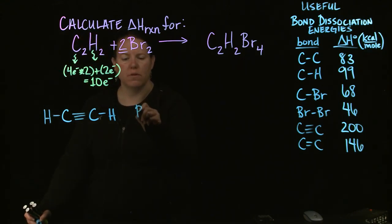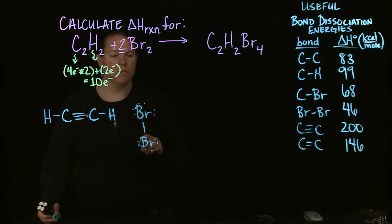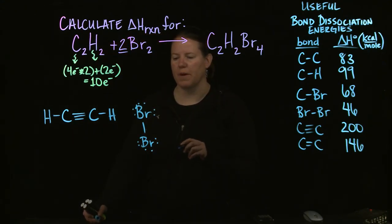For Br2, you can also do that. Let's do it like this. Br2, each of these comes with seven valence electrons and there has to be a bond between them. There's no central atom here so you don't have to worry about that.